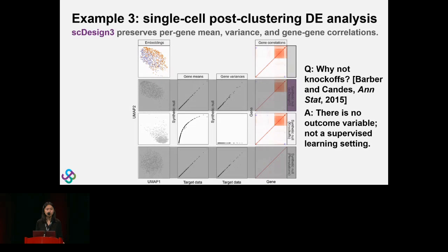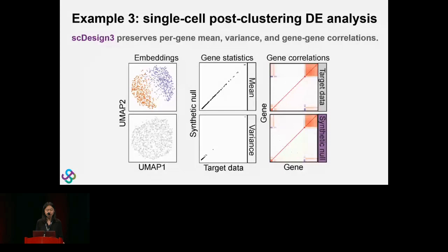Besides the first example, when the two cell types in real data have a bigger gap in their UMAP embedding — meaning they're better separated — we can still generate synthetic null data to fill in the gap while preserving the overall topology of the real cells. Again, gene mean, variance, and gene-gene correlations are well preserved.